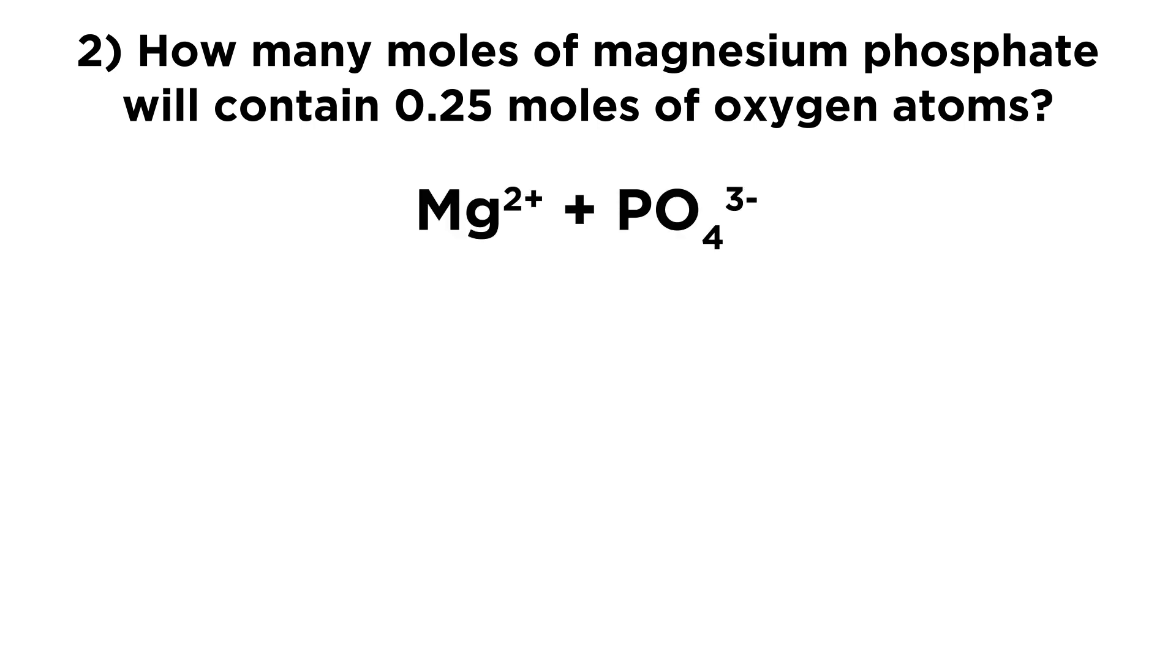So magnesium phosphate, that is definitely going to be an ionic compound because we have a polyatomic ion, phosphate, in there.